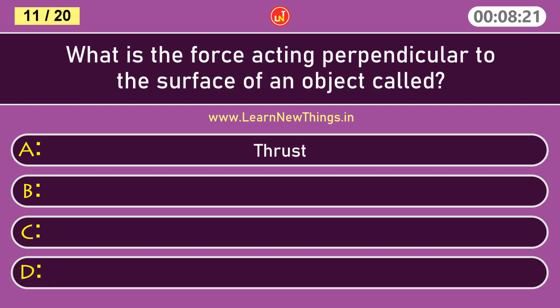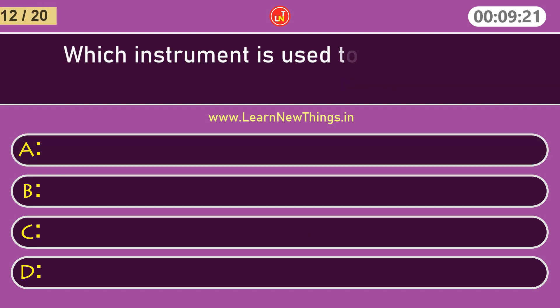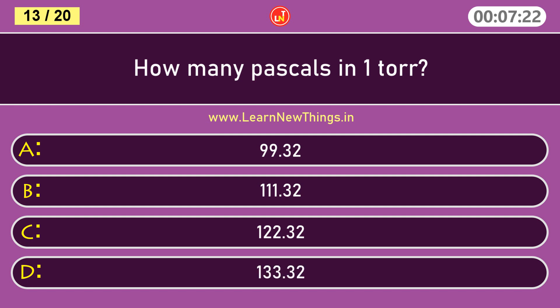What is the force acting perpendicular to the surface of an object called? Thrust. How many Pascals in 1 torr? 133.32.